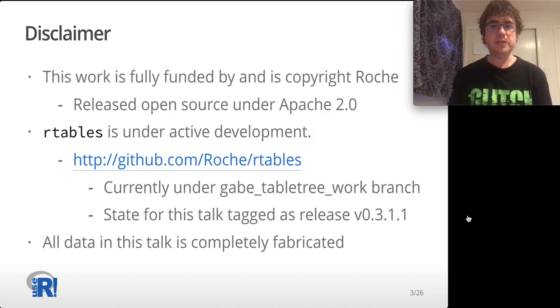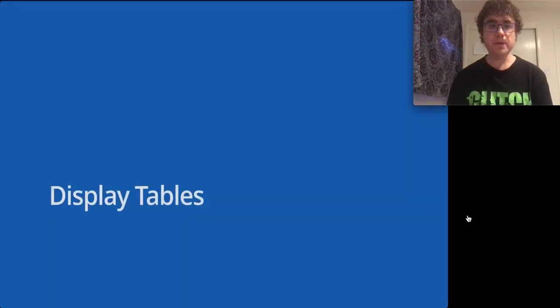All the features I'm going to talk about today are currently in a feature branch called Gabe table tree work, but they have been tagged as a release in GitHub and will be merged into production in the future. All the data in this talk is completely fabricated. So display tables - what am I talking about when I'm talking about complex tabulations?